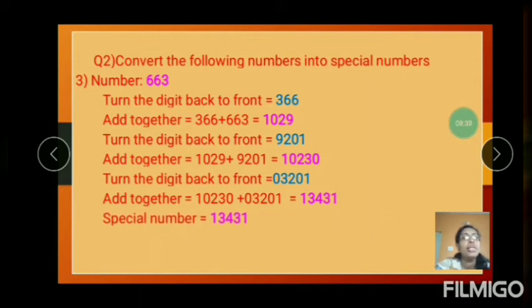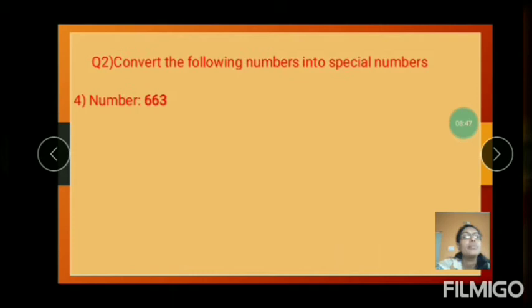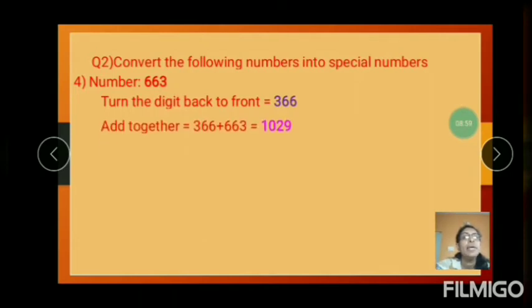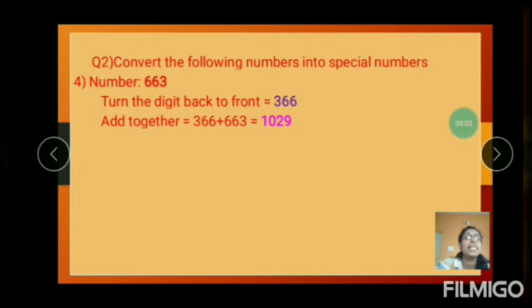The special number is 13431. And the next number: 663, and the digit back to front is 366. Add together: 366 plus 663. The number is 1029.